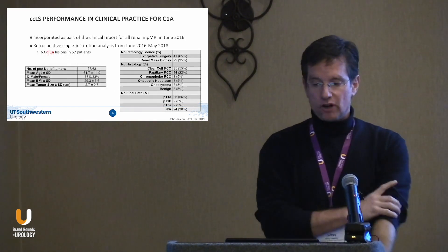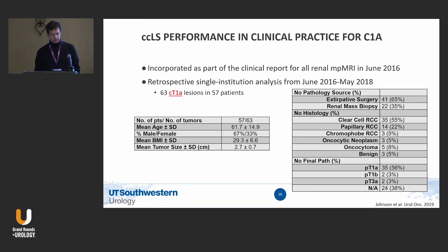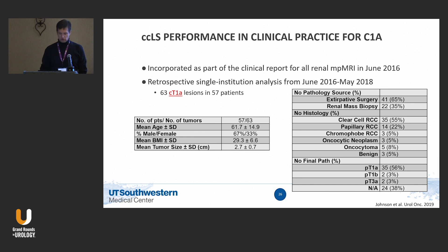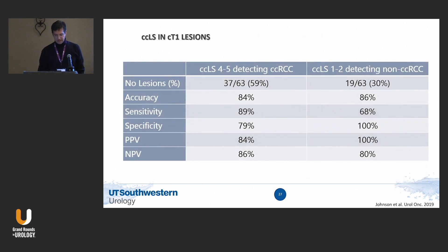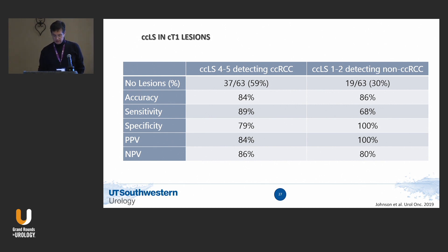Since 2016, the CCLS has been in every report at UT Southwestern. We looked at performance not just for T1As but also for T3 and T4 tumors. Prospectively, the numbers are even better — there's some learning with the radiologist and feedback loops from pathology. Sensitivity for CCLS 4 and 5 is now up to almost 90%, positive predictive values in the mid-80s. And for CCLS 1 and 2, the positive predictive value for not being clear cell carcinoma is now 100%.